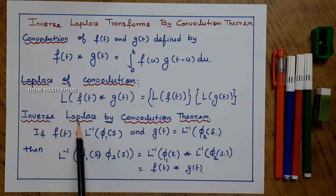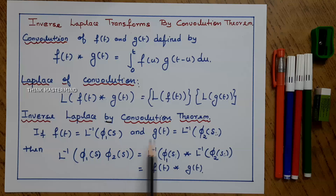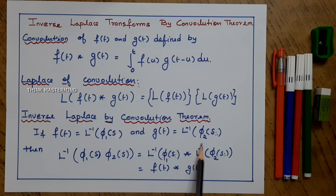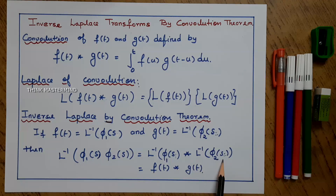From using this definition, we have to see what is the Inverse Laplace by Convolution Theorem. If f(t) is L inverse of φ₁(s) and g(t) is L inverse of φ₂(s), then L inverse of the product of the two functions is equal to L inverse of φ₁(s) convolved with L inverse of φ₂(s), that is f(t) * g(t).